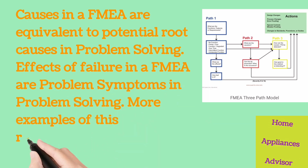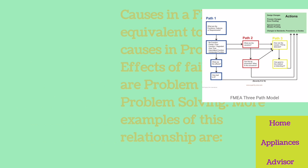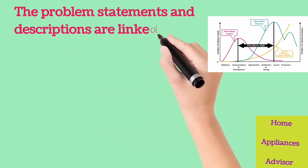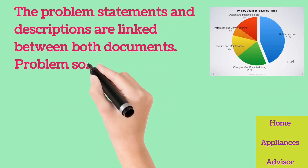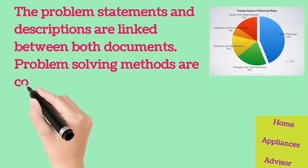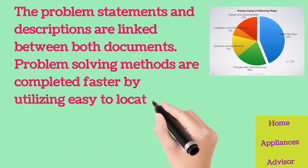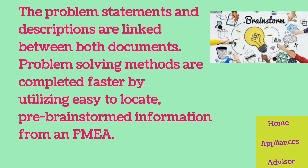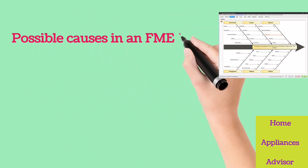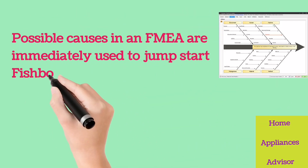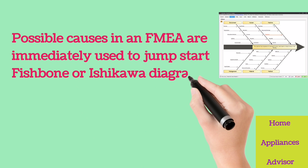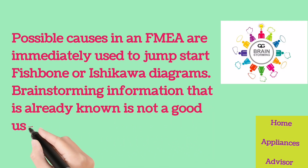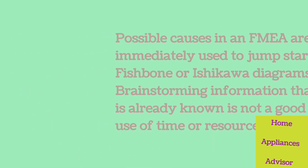More examples of this relationship: The problem statements and descriptions are linked between both documents. Problem solving methods are completed faster by utilizing easy-to-locate, pre-brainstormed information from an FMEA. Possible causes in an FMEA are immediately used to jumpstart fishbone or Ishikawa diagrams. Brainstorming information that is already known is not a good use of time or resources.